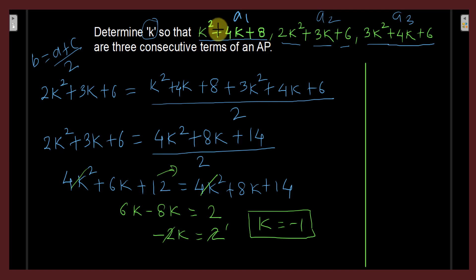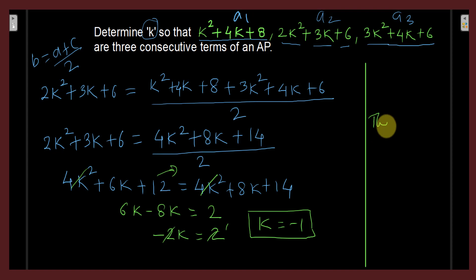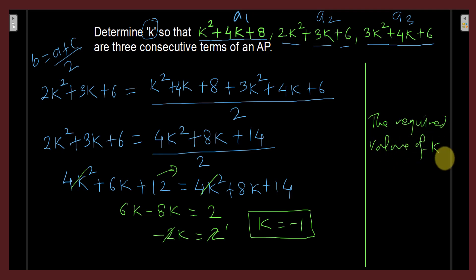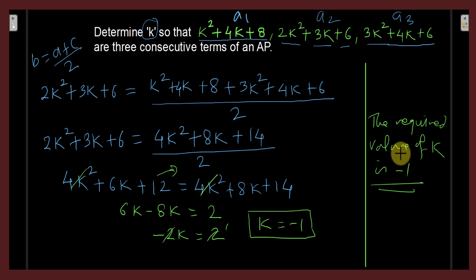We have got the value of k as minus 1. If you take k equals minus 1, then a1, a2, and a3 will be consecutive terms of an AP. At the end, write the answer: the required value of k is minus 1. Always develop the habit of writing the answer, as the examiner gives marks for the final answer too.